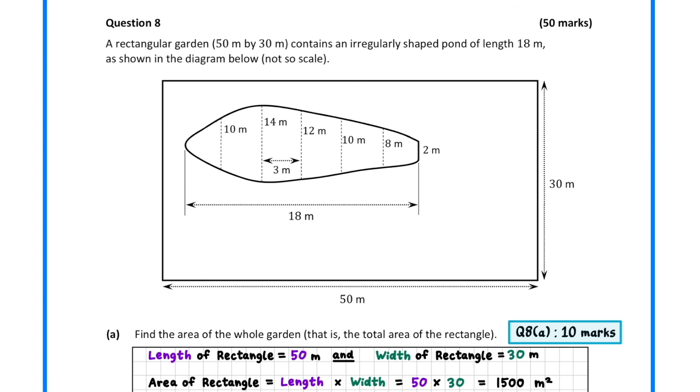In question 8, we are given a diagram of a rectangular garden which contains an irregularly shaped pond. In part 1, we must find the area of the rectangle. To do this, we multiply the length by the width.